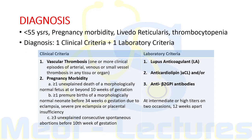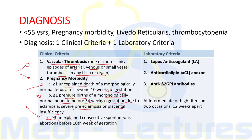The two clinical criteria are: first, vascular thrombosis — one or more clinical episodes of arterial, venous, or small vessel thrombosis in any tissue or organ; second, pregnancy morbidity — which includes one or more unexplained deaths of a morphologically normal fetus at or after 10 weeks of gestation, one or more premature births of a morphologically normal neonate before 34 weeks due to eclampsia, severe preeclampsia, or placental insufficiency, or three or more unexplained consecutive spontaneous abortions before the 10th week of gestation.